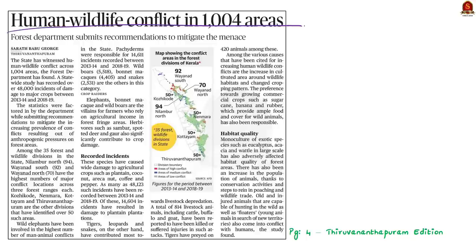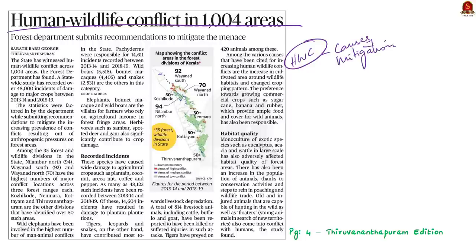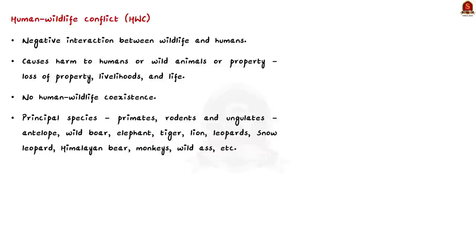The next news article mentions a recent study which found that more than a thousand areas have witnessed human-wildlife conflict in Kerala. In this discussion we'll learn what human-wildlife conflict is, see some of its causes and mitigation strategies, and discuss the article. The syllabus relevant to this article is highlighted for your reference.